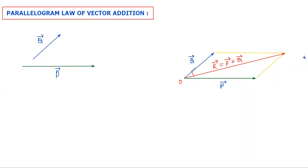The angle between vector P and vector Q is theta. The angle between vector P and the resultant vector R is alpha — the resultant angle is alpha. In this case, the formula is based on the triangle law.